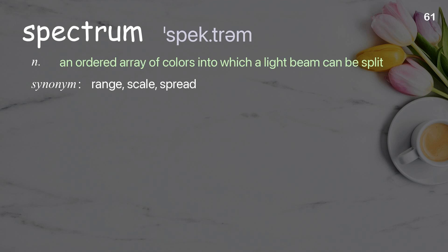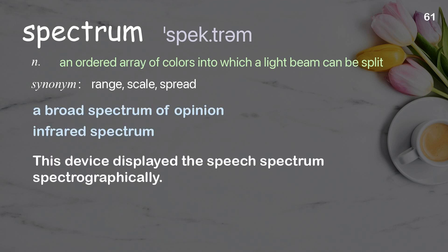Spectrum: an ordered array of colors into which a light beam can be split. Examples: a broad spectrum of opinion, infrared spectrum. This device displayed the speech spectrum spectrographically.